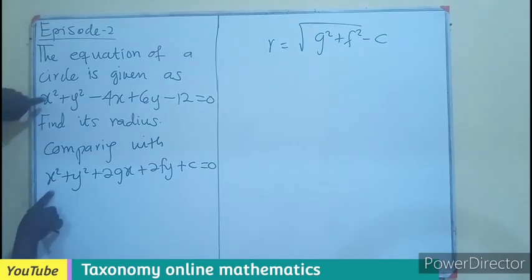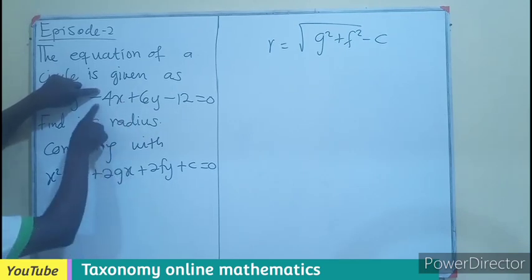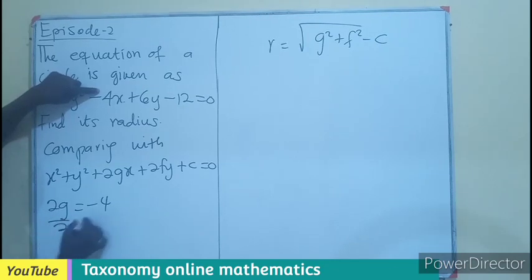By comparison, we can see that the x terms are the same. Therefore, minus 4 and 2g must also be the same. So 2g equals minus 4. Dividing by 2, our g is going to be minus 2.